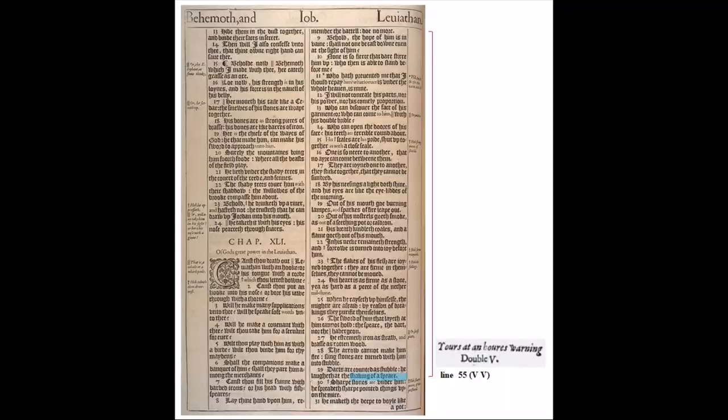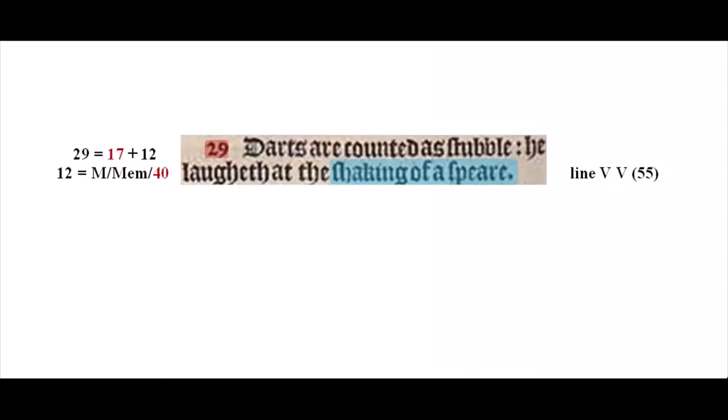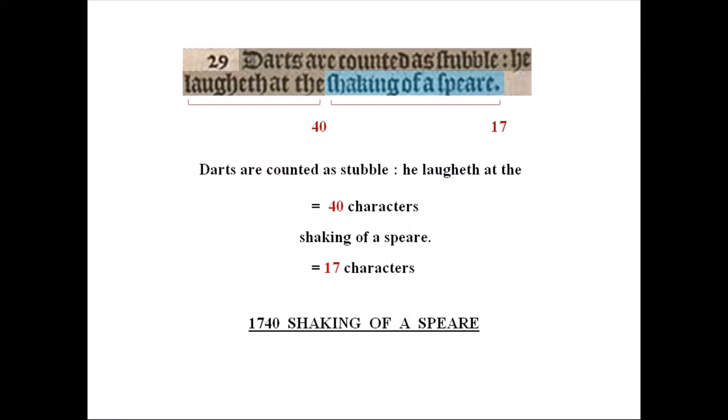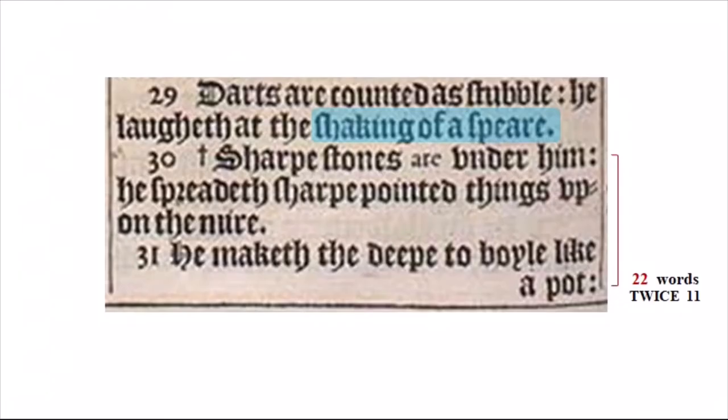Alexander Waugh pointed out that a possible cipher for 1740 is 57, equal to 17 plus 40. I think another may be 29 — the verse 'shaking of a spear' is printed in. 29 is equal to 17 plus 12, and in Latin gematria 12 equals the letter M, which in Hebrew is equivalent to 40. Counting all the characters in the verse, there are 40 before 'shaking of a spear,' and beginning with 'shaking of a spear' there are 17 characters to the end of the line. After 'shaking of a spear' there are 22 — or twice 11 — words to the end of the page.